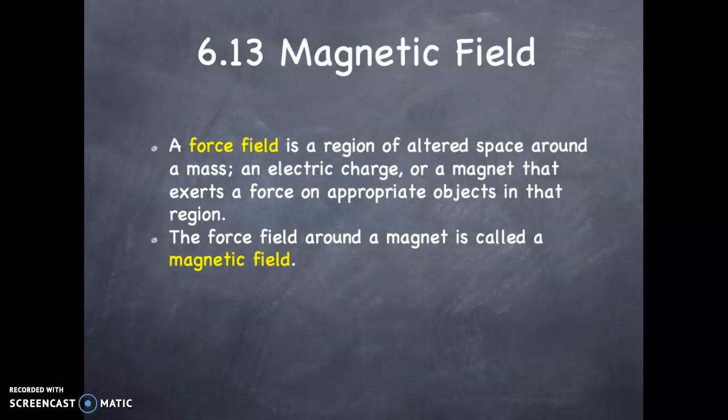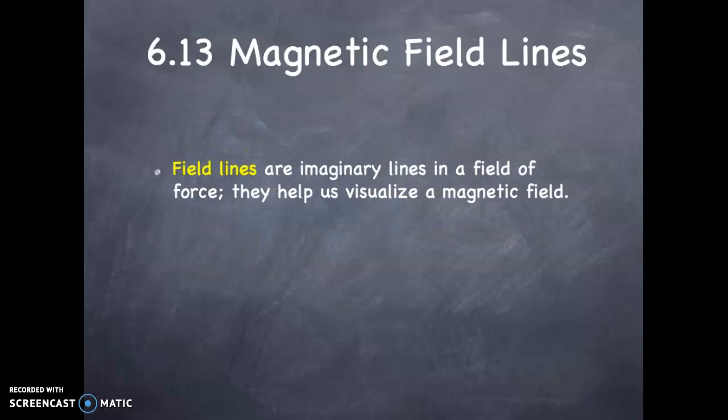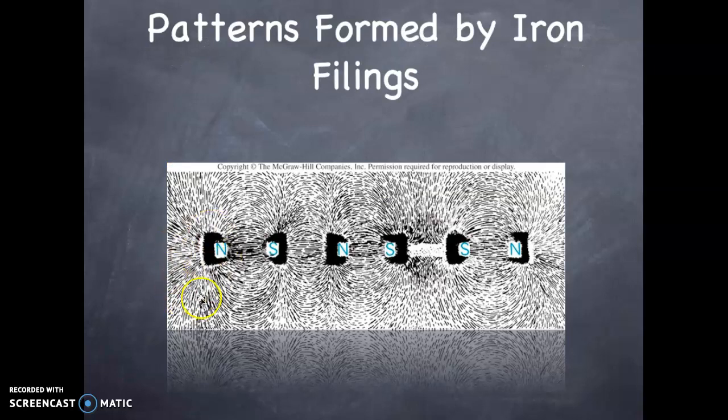A force field is a region of altered space around a mass, such as gravitational force field, around an electrical charge which is electrical force field, or around a magnet that exerts a force on appropriate objects in that region. The magnetic force field around a magnet is called a magnetic field. Field lines are imaginary lines in a field of force that help us visualize a magnetic field. This is an illustration of magnetic field lines with iron shavings having aligned themselves around three different bar magnets.